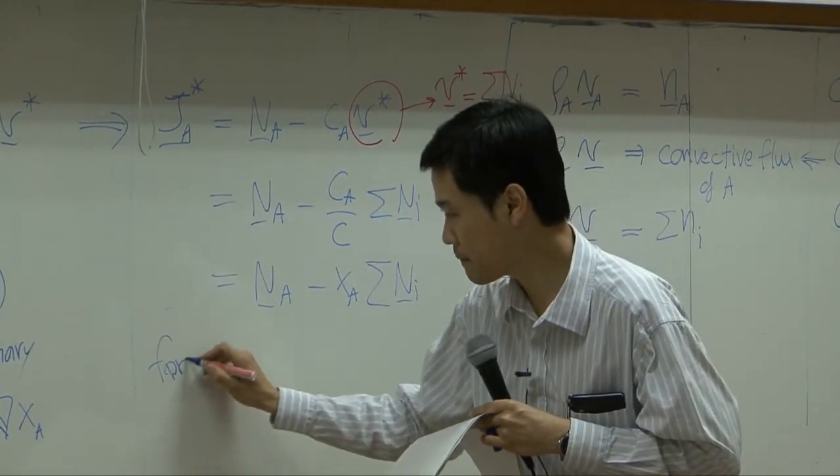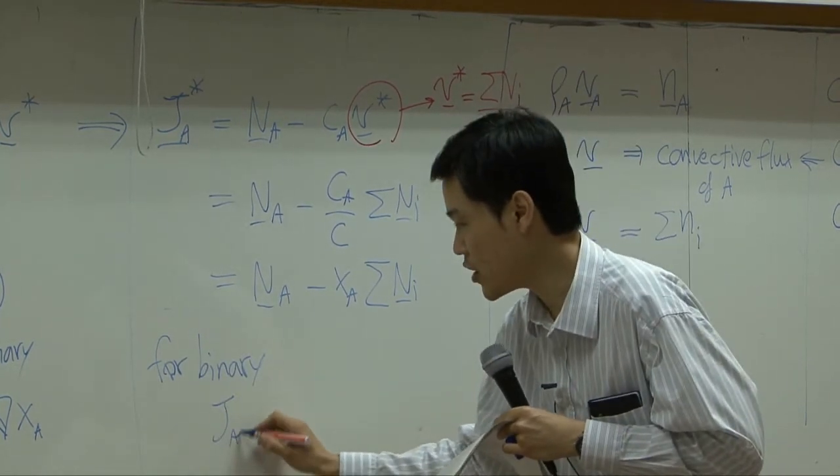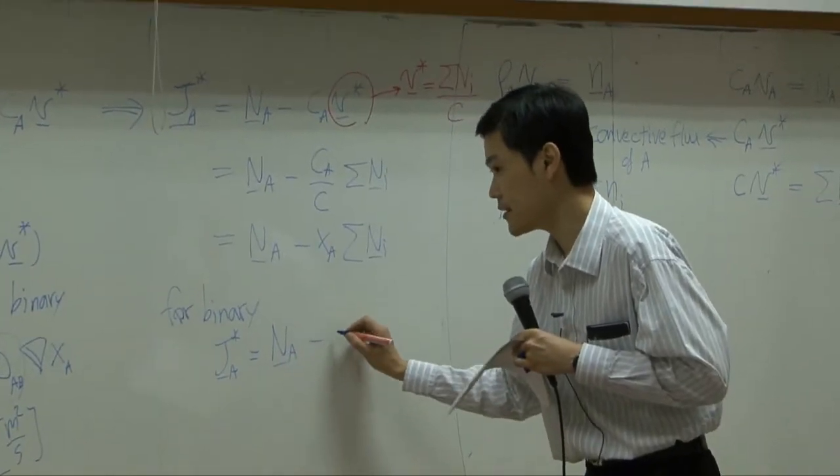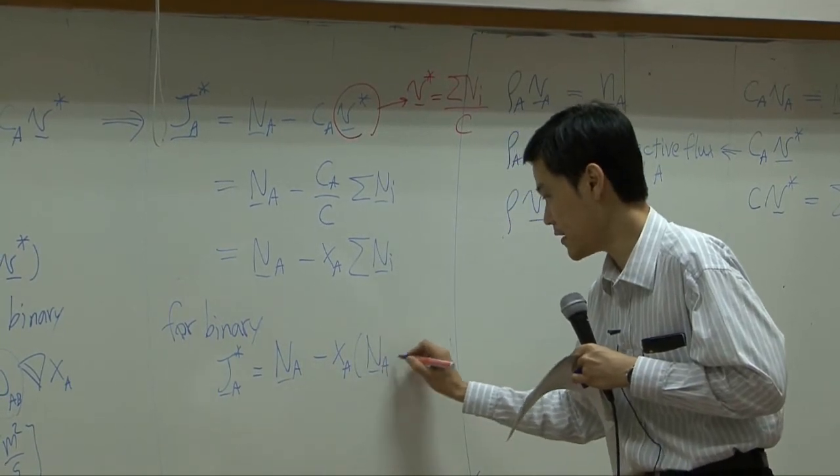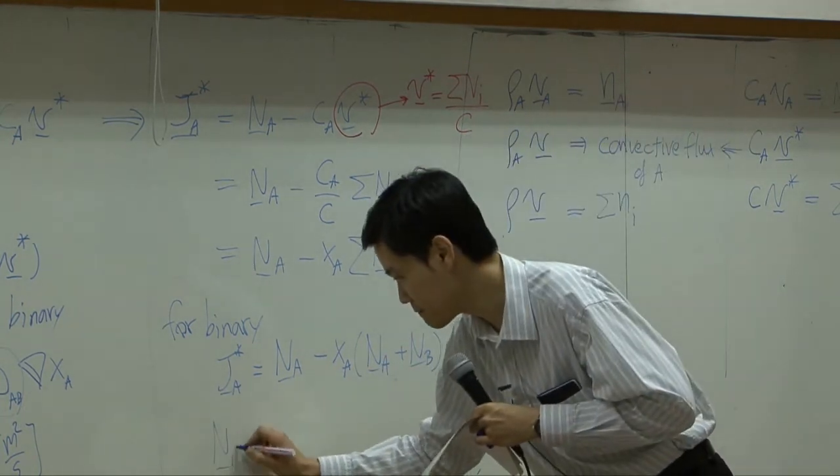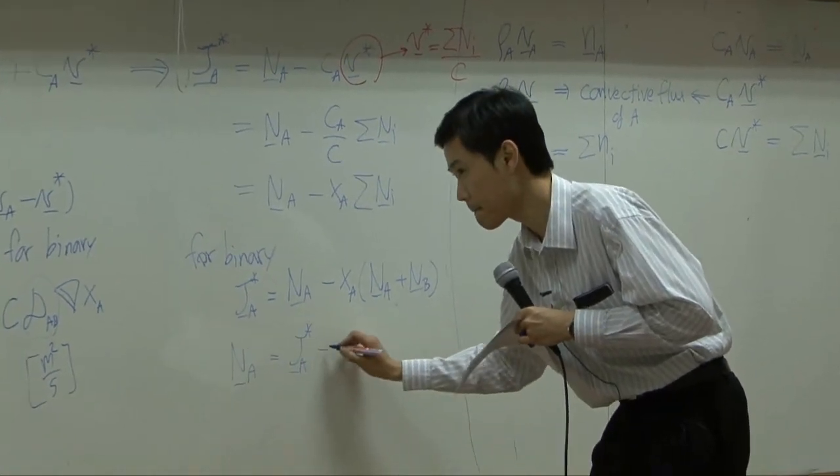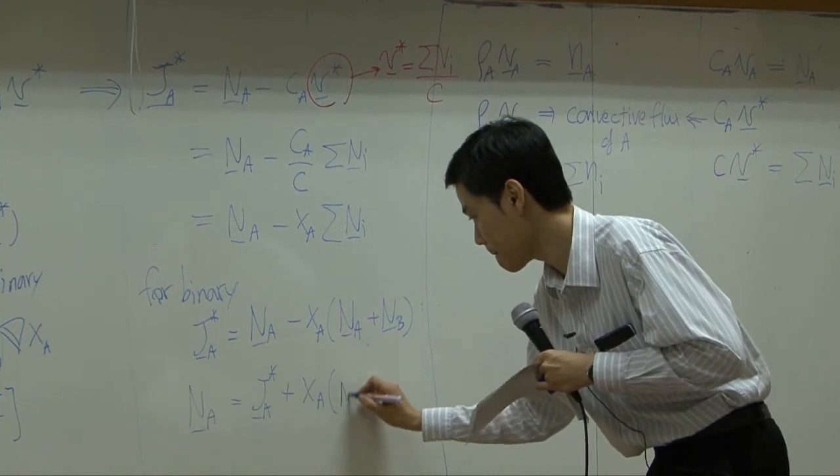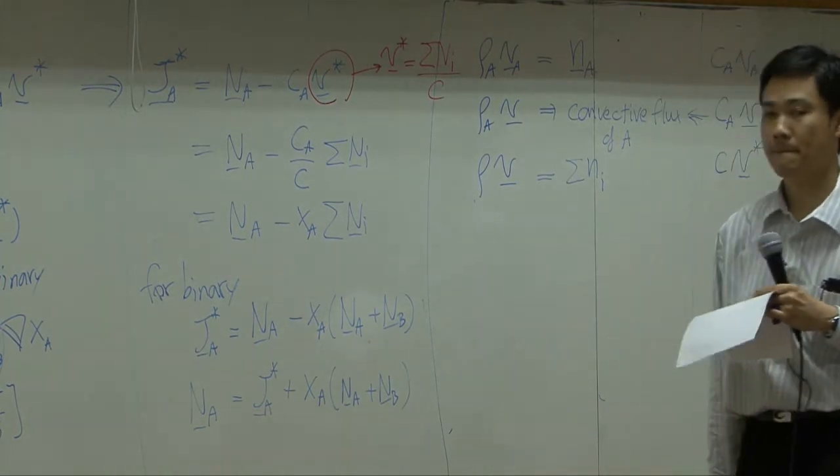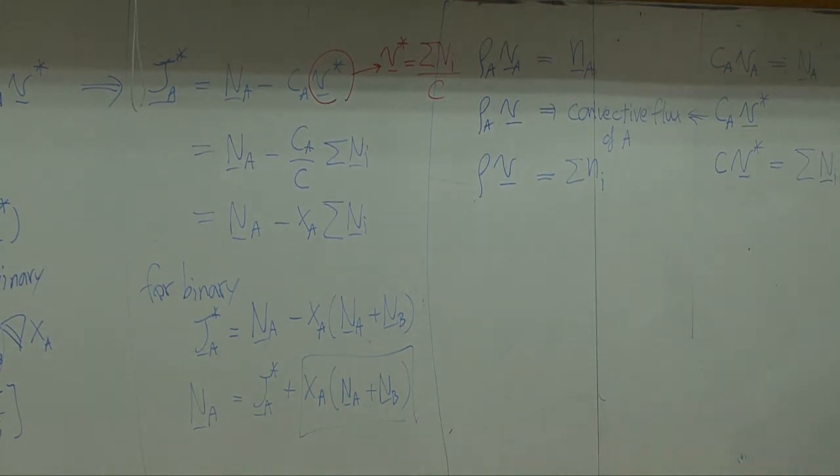Writing for binary, you can have J_A star equal to N_A minus X_A times N_A plus N_B. Or converted, rearranged the equation. Once again, this term can also be thought of as convective flux of A.